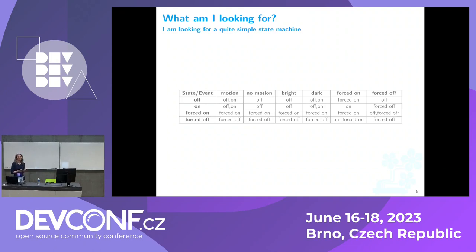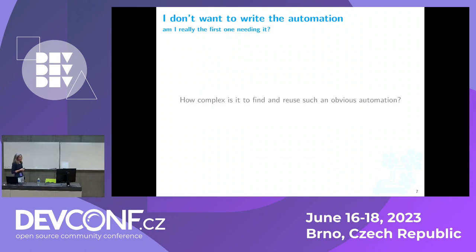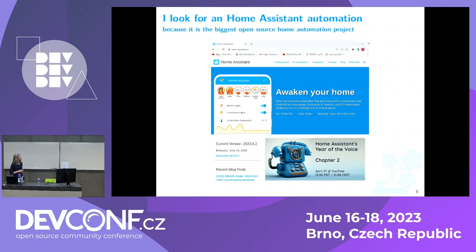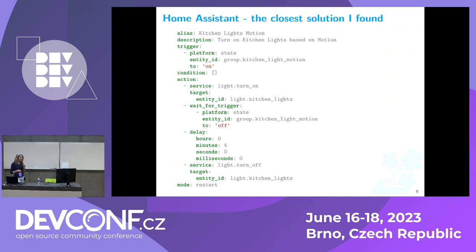My next question is: how complex is it to find and reuse such an obvious automation? I try to answer this question using Home Assistant, which I think most of you know. For those who don't, it's nowadays the biggest open source home automation project we have. I was looking for a solution in Home Assistant, and this is the closest solution I was able to find — not written by me, I found it by Googling.